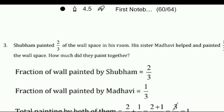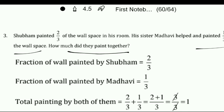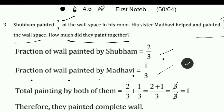Question number 3: Shubham paints 2 by 3 of the wall space in his room. His sister Madhvi helped and painted 1 by 3 of the wall space. How much did they paint together? Together means addition. Fraction painted by Shubham is 2 by 3, and by Madhvi is 1 by 3. So total is 2 upon 3 plus 1 upon 3. Same denominator, so 2 plus 1 is 3 upon 3, which equals 1.